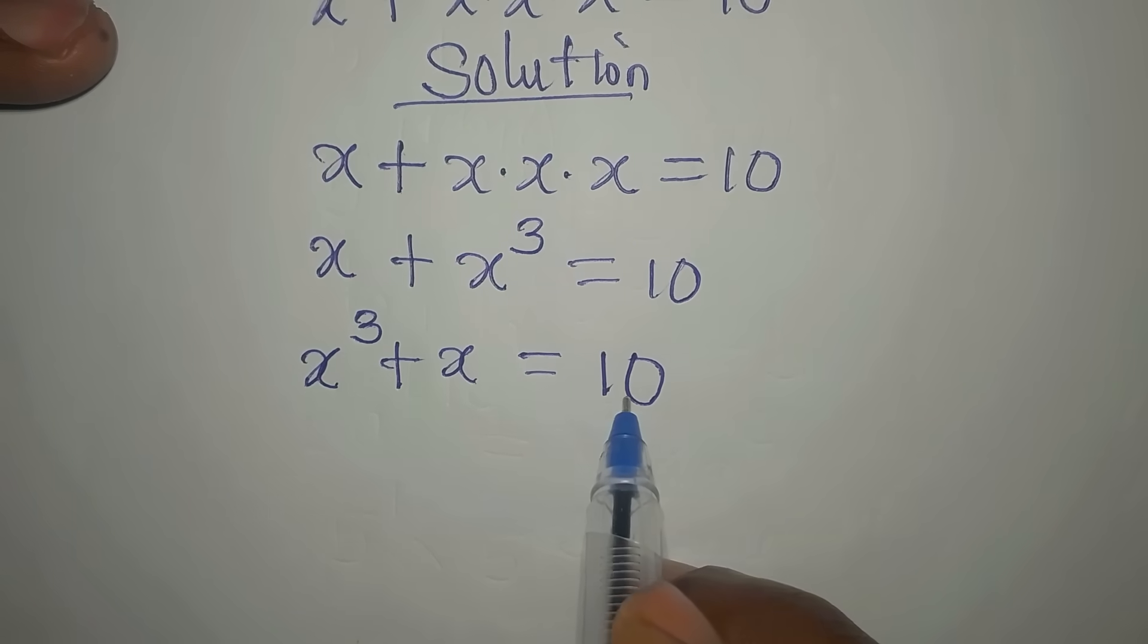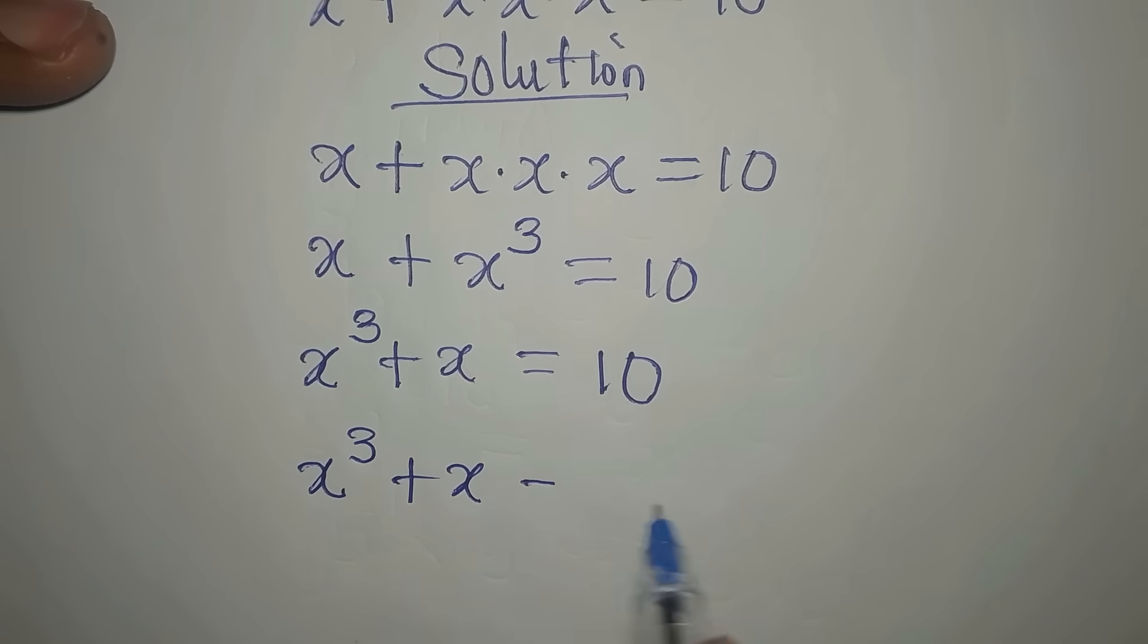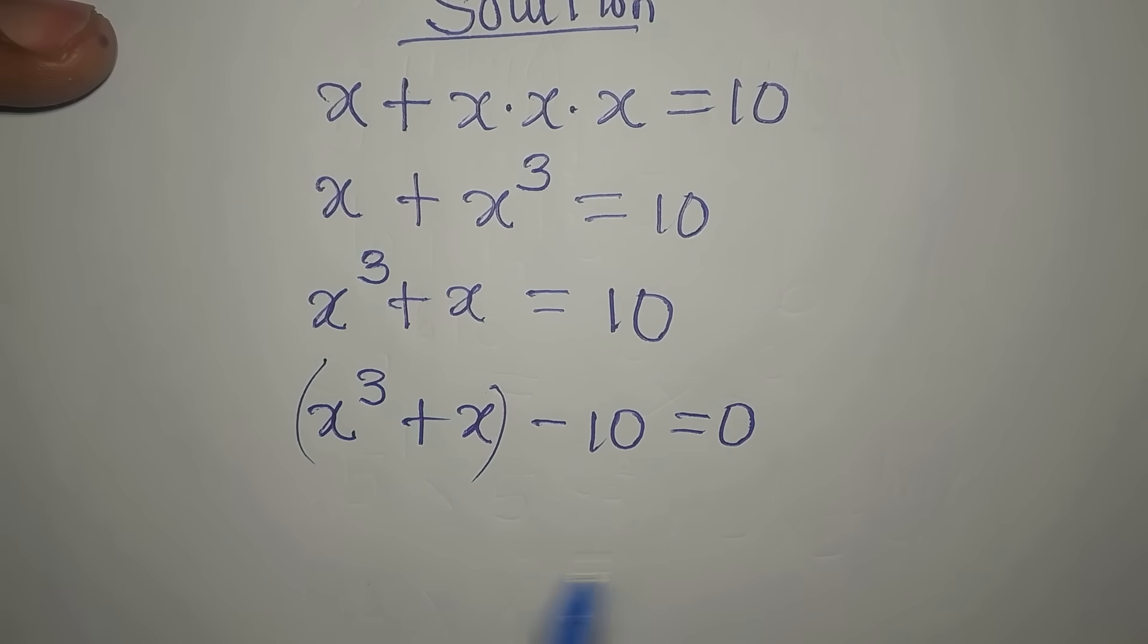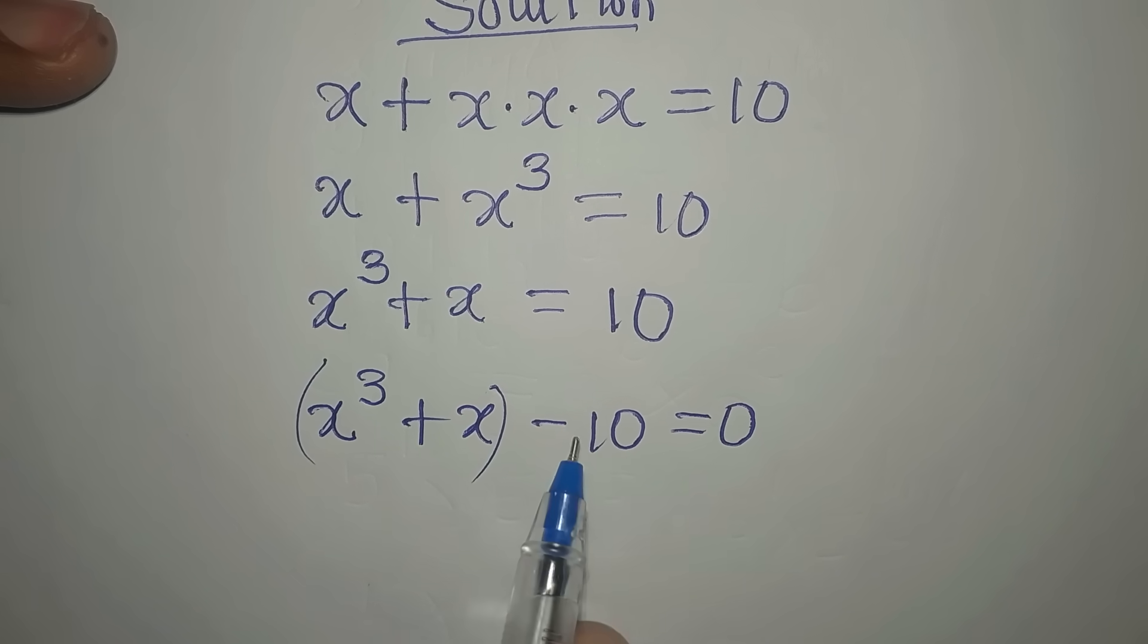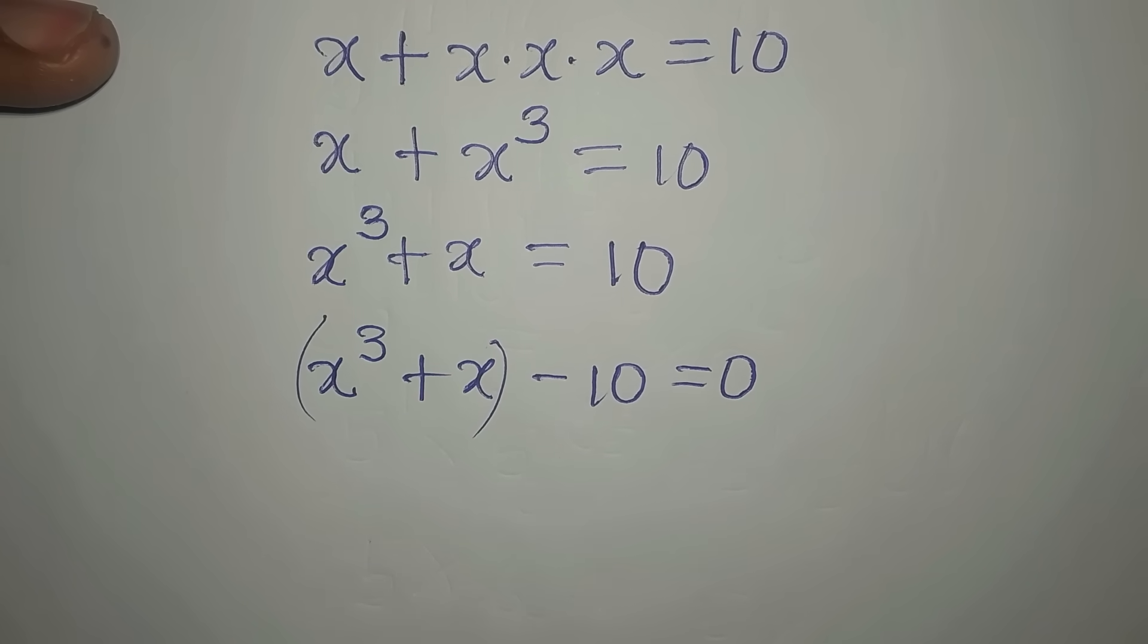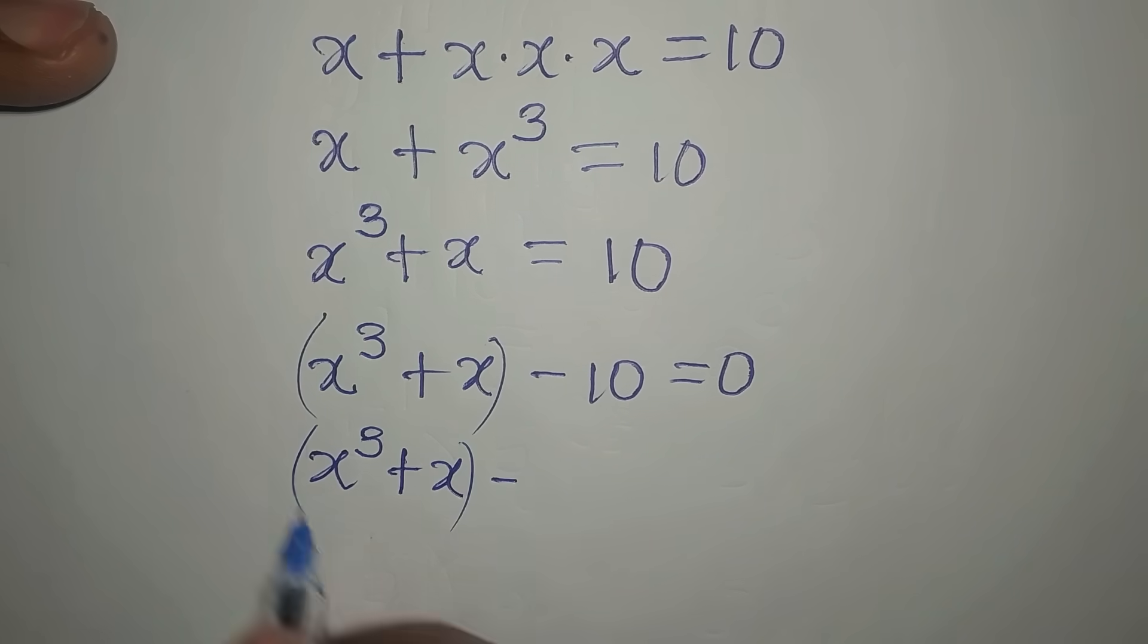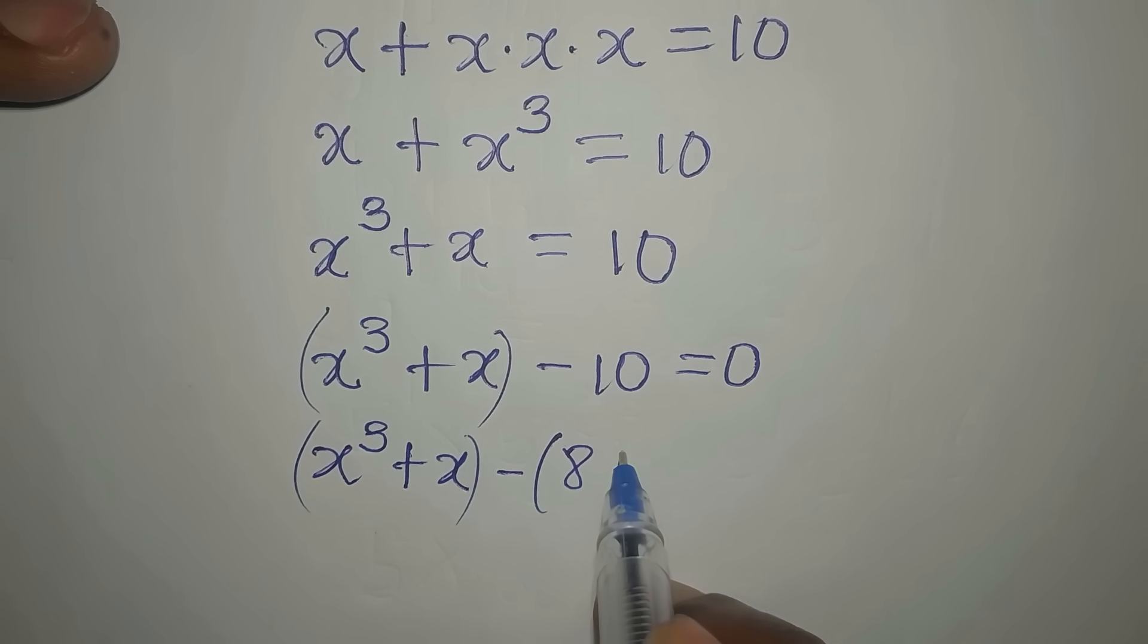I can bring this 10 to the left, so x to the power of 3 plus x minus 10 is equal to zero. One thing you must know: if this is equal to zero, that means this one here should be equal to the 10. If x to the power of 3 plus x then minus 10 is equal to zero, it means that the value of this and this have to be the same. So what I will do now is to express this in this form. I have x to the power of 3 plus x, then this 10 is going to be 8 plus 2.